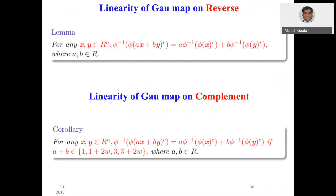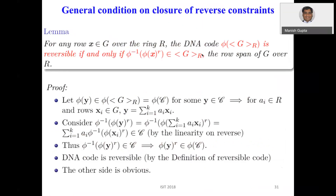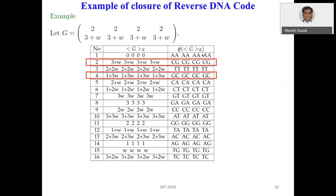Regarding linearity of the Gao map on the reverse: for any x, y in R^n and a, b in R, phi^{-1}(phi(ax + by)^r) = a * phi^{-1}(phi(x)^r) + b * phi^{-1}(phi(y)^r). So the map is linear on the reverse. The general condition for closure of the reverse constraint is: the DNA code phi(G_R) is reversible if and only if x^r belongs to the span of G for every row x of G. We can use this condition on the generator matrix to verify that a code is reversible.